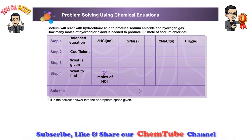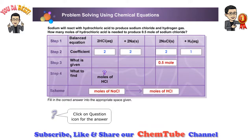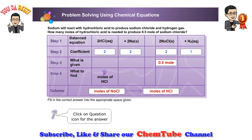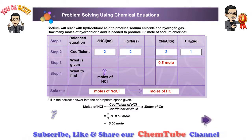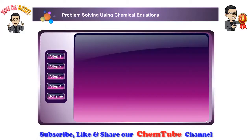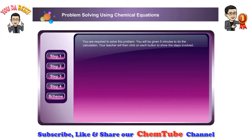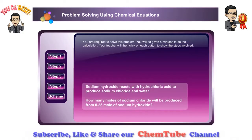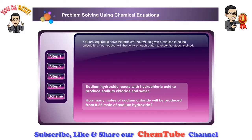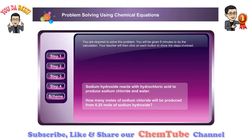Sodium will react with hydrochloric acid to produce sodium chloride and hydrogen gas. Let's do another activity. You are required to solve this problem. Sodium hydroxide reacts with hydrochloric acid to produce sodium chloride and water. What is the number of moles of sodium chloride which will be produced from 0.25 mole of sodium hydroxide?